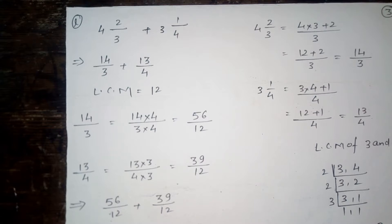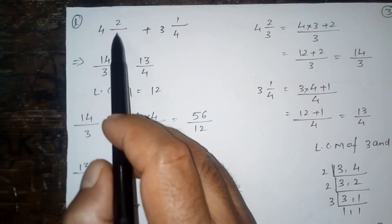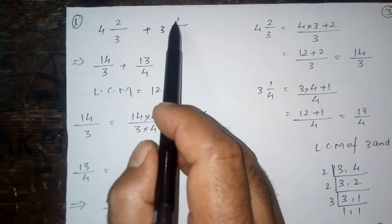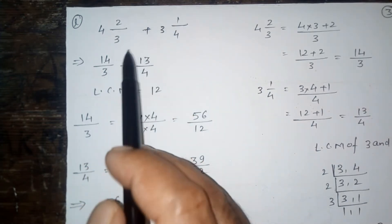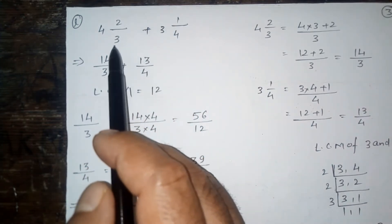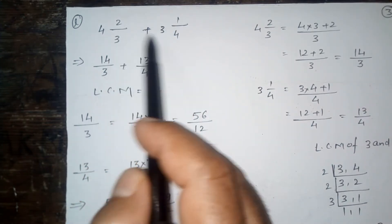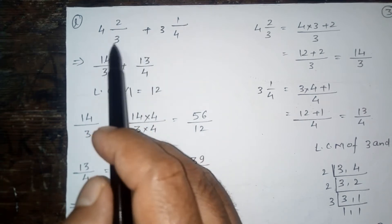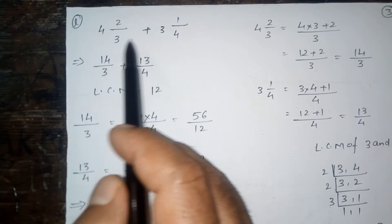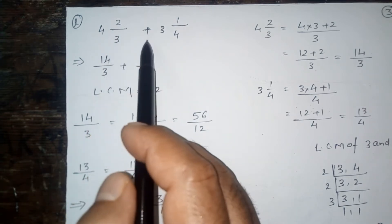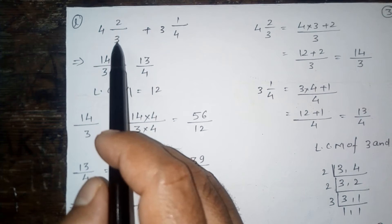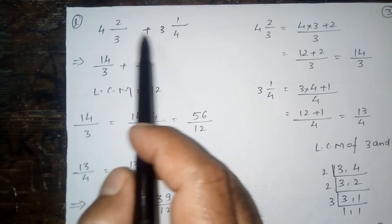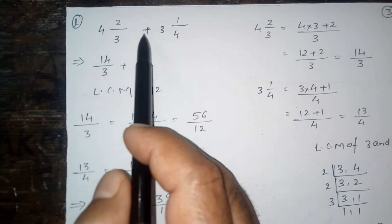Your question is 4 and 2 upon 3 plus 3 and 1 upon 4. You know very well these two fractions are mixed fractions.